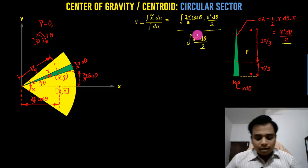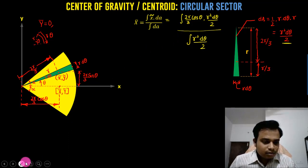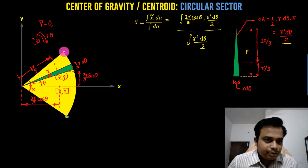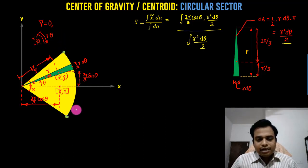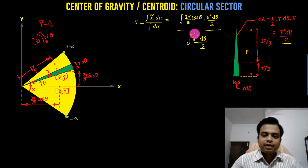Now what you can do is you have to start from here, from this point, and you need to end over here. So you can actually take the limit from minus alpha to plus alpha. You can put in the limits from minus alpha to plus alpha in both numerator and denominator.